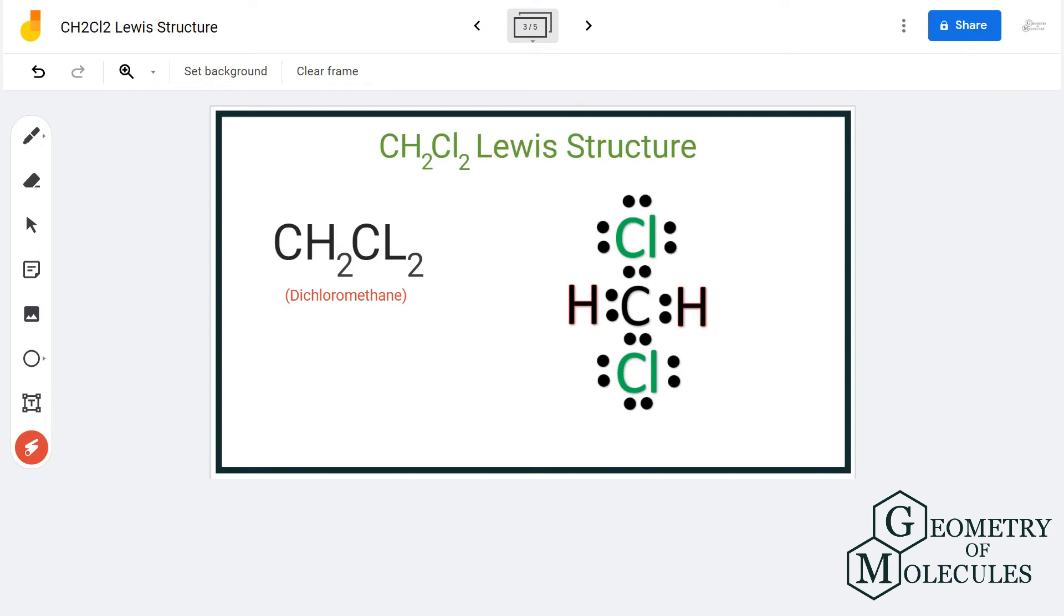So after placing valence electrons around all the atoms, we can see that chlorine atom has a total of eight valence electrons in its outer shell, hydrogen has two valence electrons, and even carbon has eight valence electrons, which means all the atoms have a complete octet structure. And this is the Lewis structure for CH2Cl2.